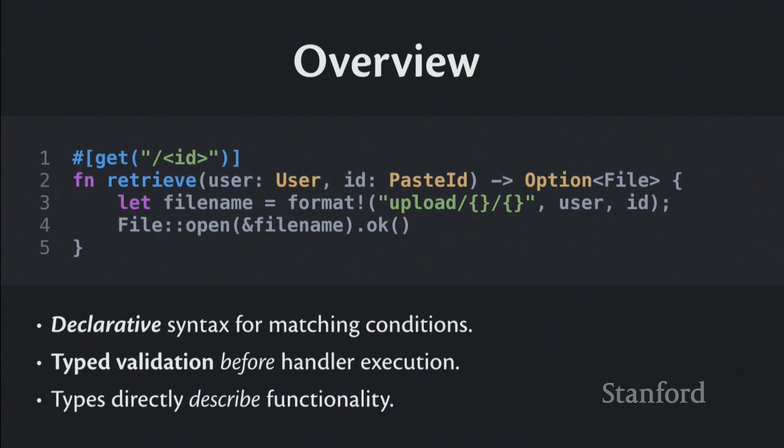The function body does the lookup: it creates a string like 'upload/user/ID' and opens that file. This might look sketchy — isn't there a directory traversal attack here? The answer is no: all of this is guaranteed to look the way you want. There's implicit input validation happening. If you got the User type, it looks the way you thought it looked; if you got the PasteID type, it looks the way you wanted. So this concatenation — the thing you just want to do — you can just do. You only write the happy path; everything else happens for you.